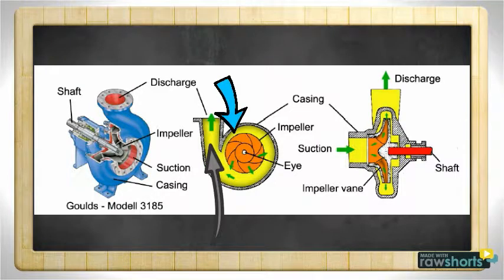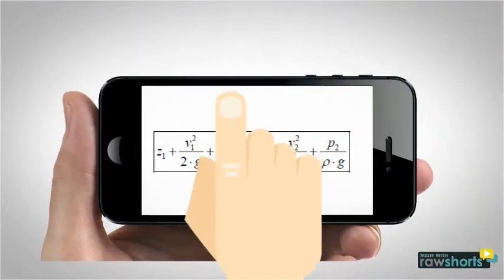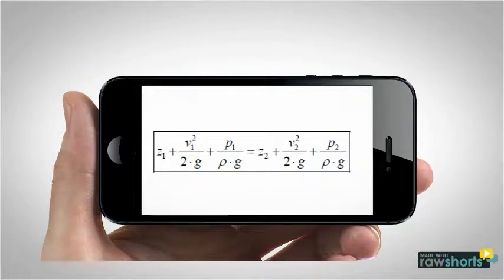But since the area is increasing from the exit of the impeller to the discharge site, the velocity decreases. By using Bernoulli's equation, we know that if the velocity decreases, the pressure must increase.